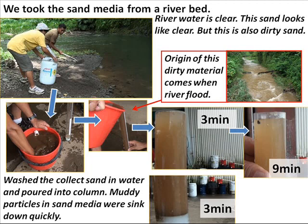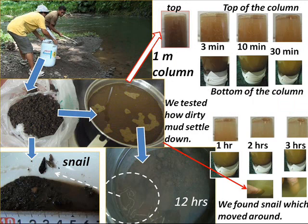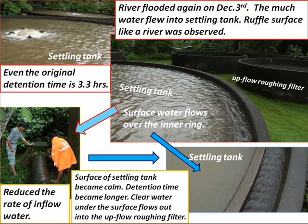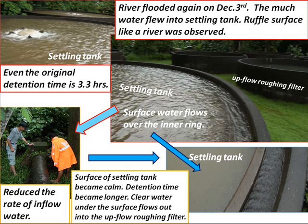We tested how the dirty particles settled during the original settling time. We found a snail which had moved around after 12 hours. River flooded again — much water flowed into the settling tank, and a rough surface like a river was observed. Surface turbid water flowed over the inner ring of the settling tank.